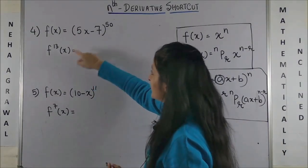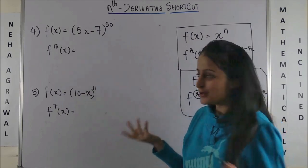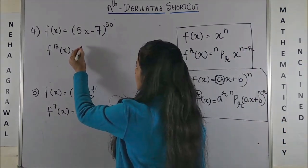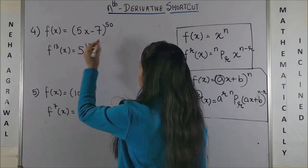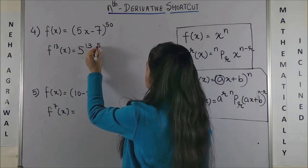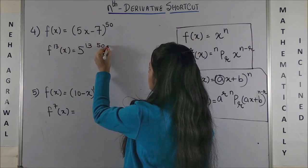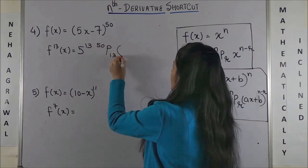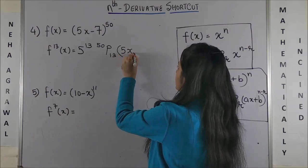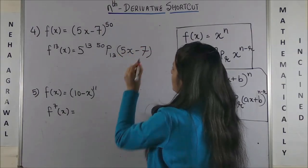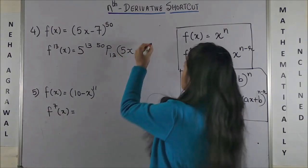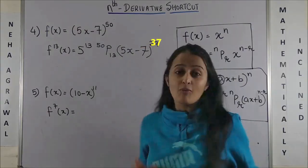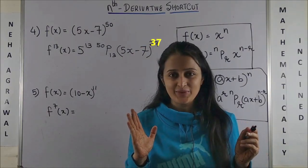Same way, moving to another question. You have to find the 13th derivative of the given function. Not to worry. Since this is 5, it simply becomes 5 raised to power 13. Then you have nPr, so 50P13. And next you have (5x - 7) whole raised to power 50 minus 13, which is 37. So interesting and quick.